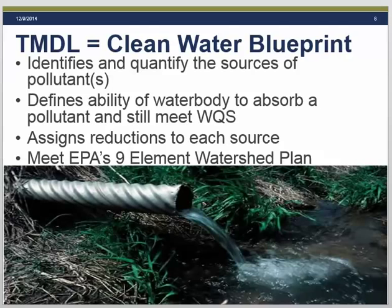The TMDL really serves as a clean water blueprint. The first step is to identify and quantify the sources of pollutant — we need to understand where the pollutant is coming from and how much of it is there now. Second is to determine how much of that pollutant the water body can absorb without violating water quality standards. Once we know how much of the pollutant is being delivered now and how much we would like to reduce that down to, we can establish a plan for bringing about those reductions. In many cases, the reductions are assigned to the different sources that were identified.